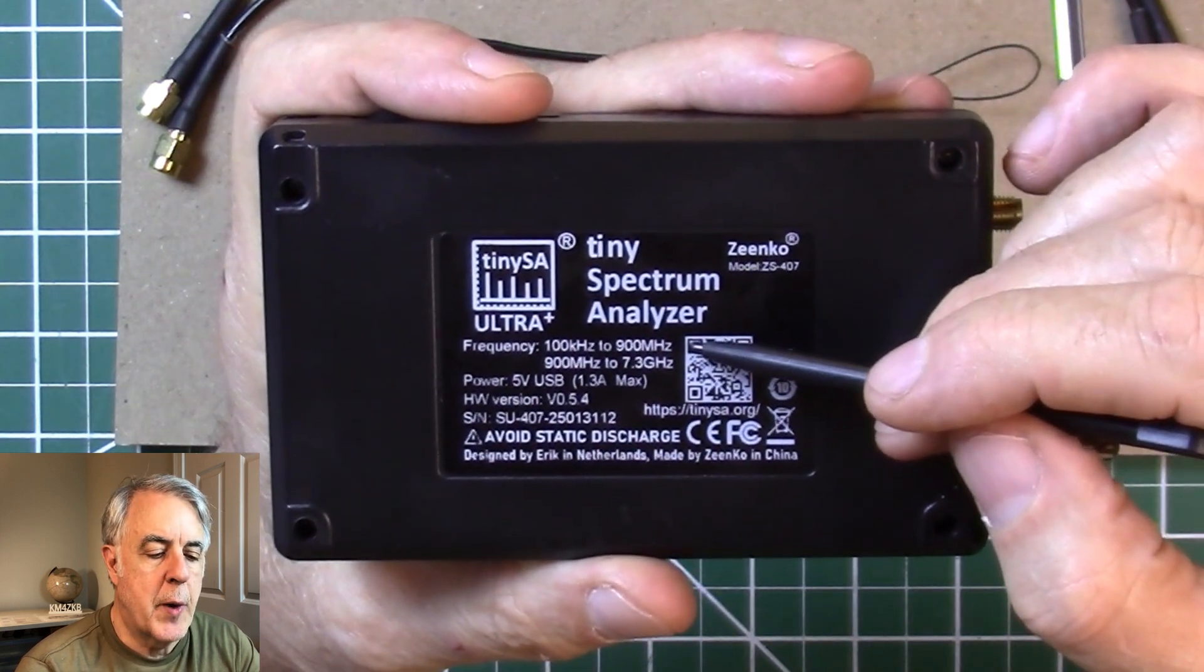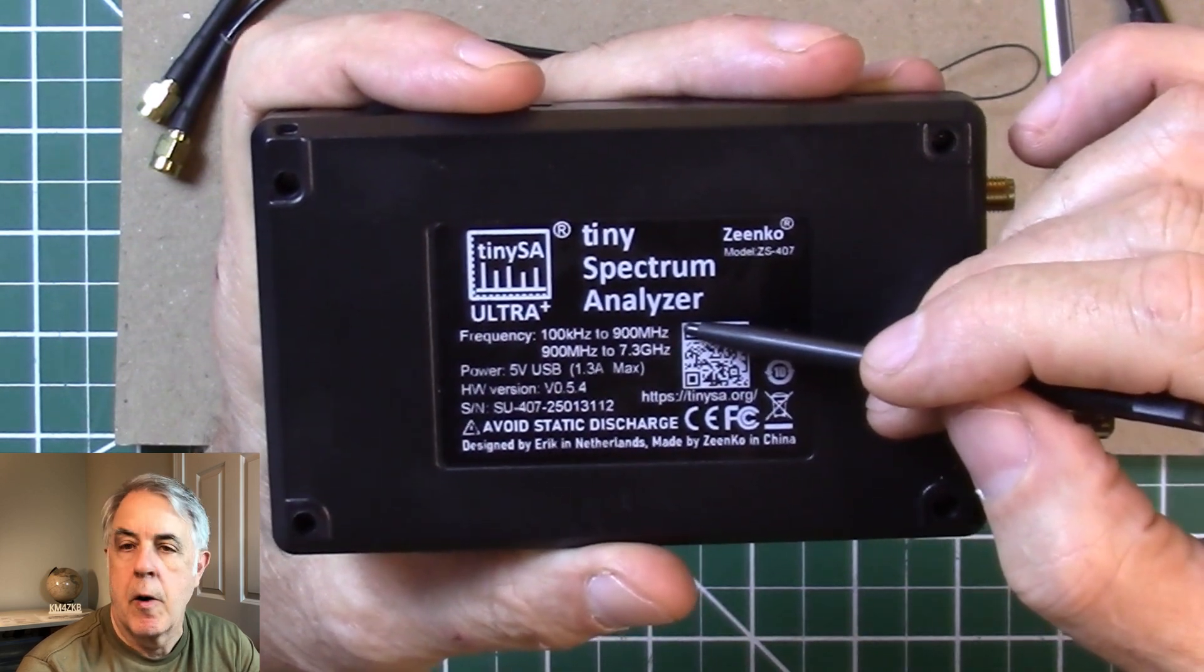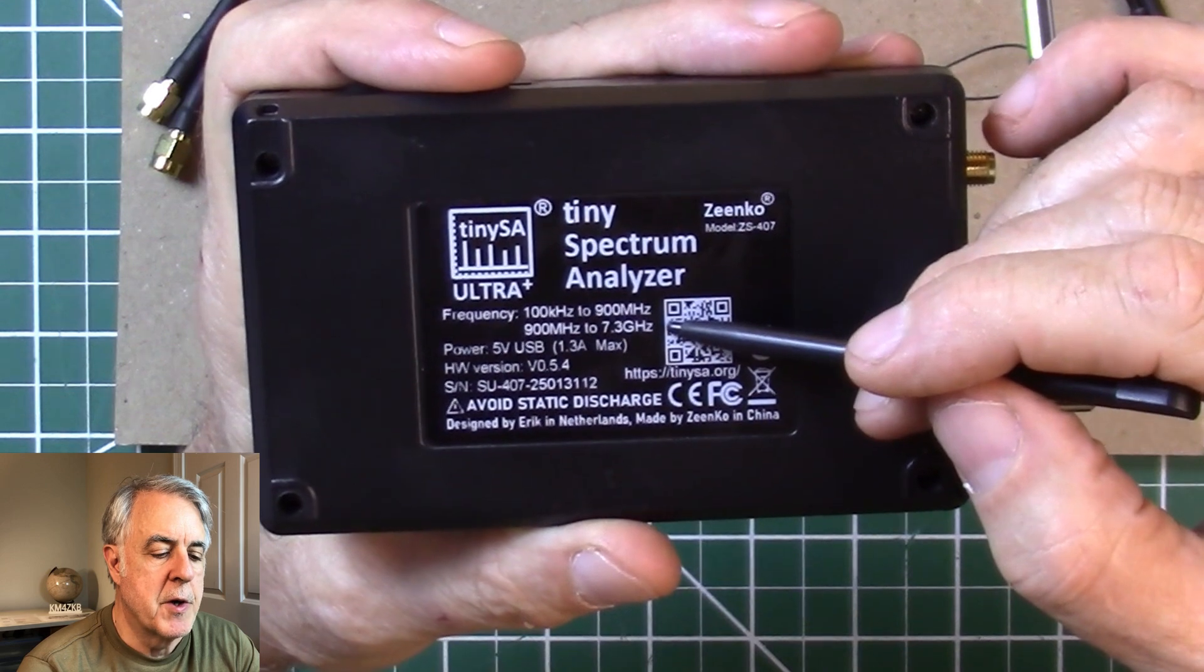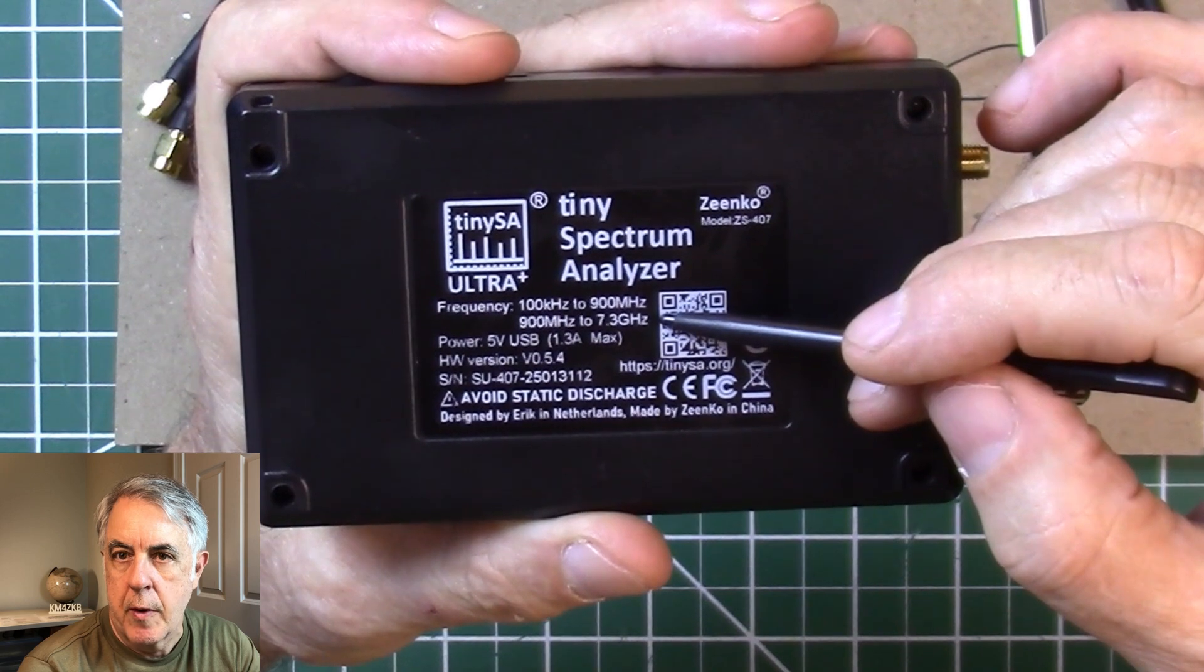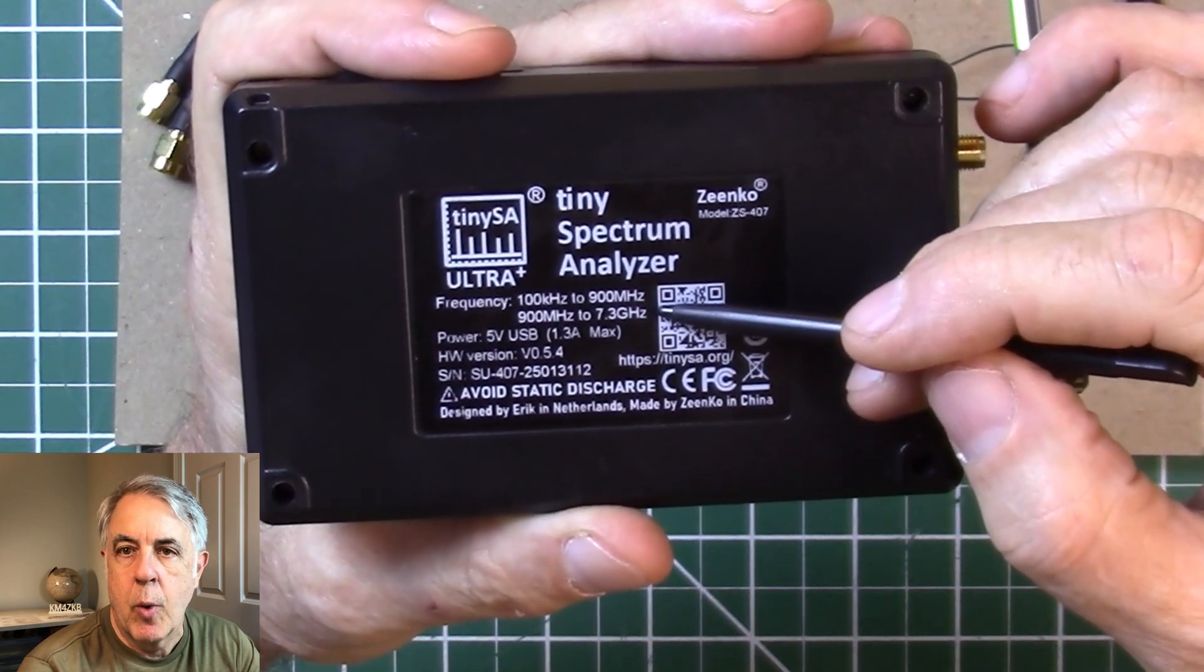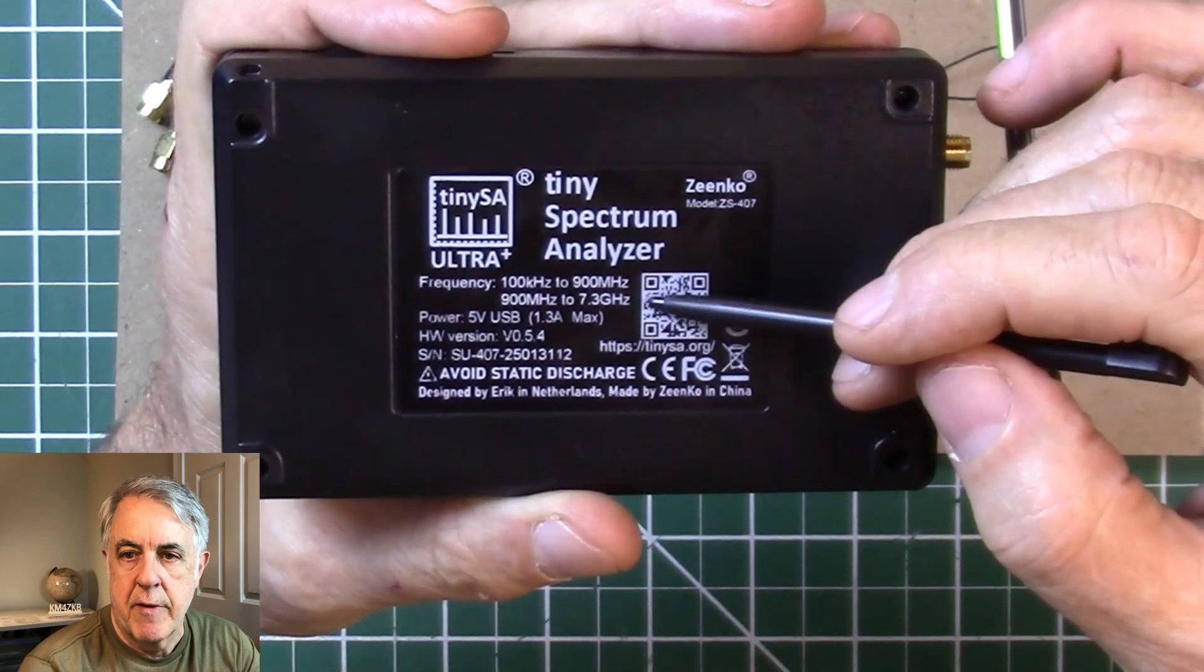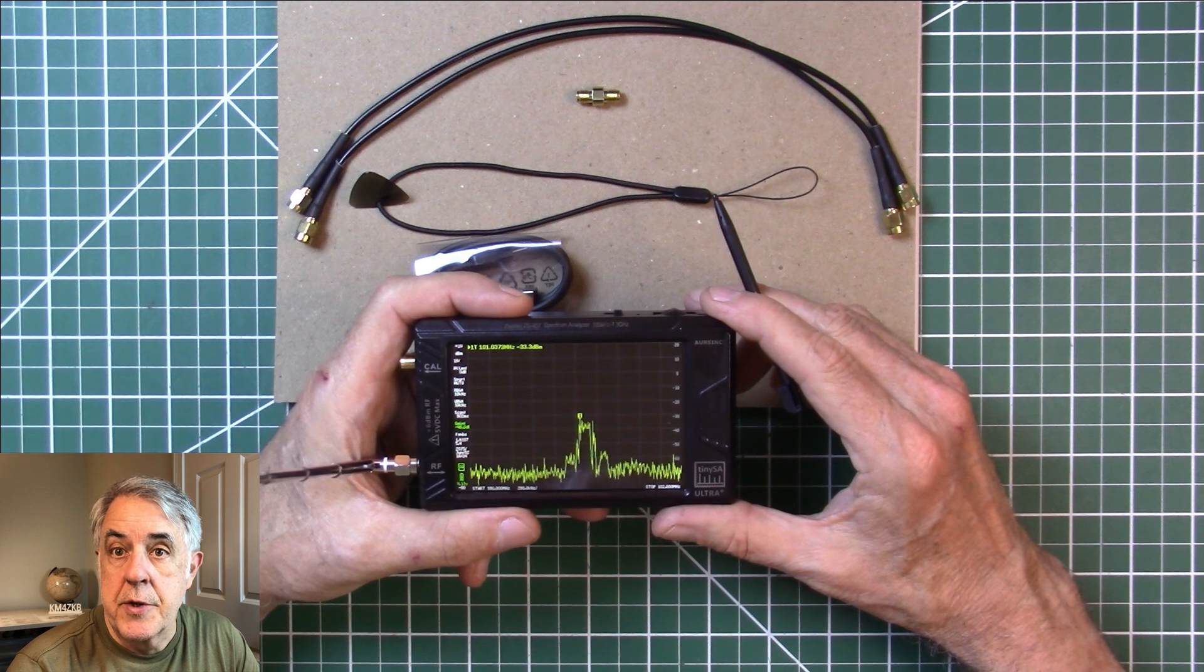The frequency range for the base frequency is still 100 kHz to 900 MHz. But when you get into Ultra mode, this version goes from 900 MHz to 7.3 GHz, where the version 406 only went up to 5.3 GHz. So if you're into that higher frequency range, you're going to need the ZS407 instead of the ZS406.